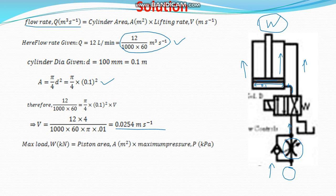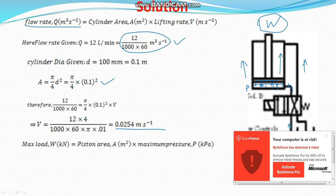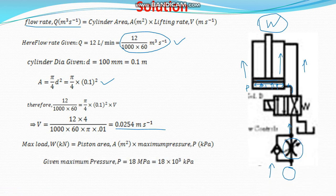Next, we have to find out the maximum load the cylinder can carry. The maximum pressure is applied on the piston. Area into pressure equals load. The maximum pressure given is 18 MPa, which is equivalent to 18 into 10 to the power of 3 kilopascal. Since pressure is in kilopascal and area is in square meters, kilopascal equals kilonewton per square meter, so the result will be in kilonewton.